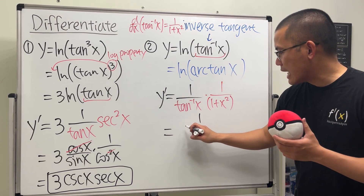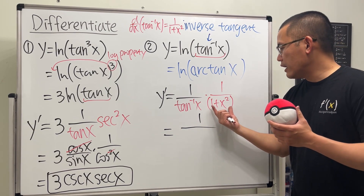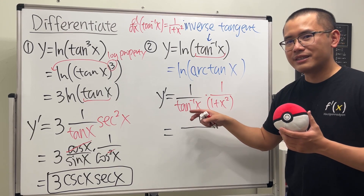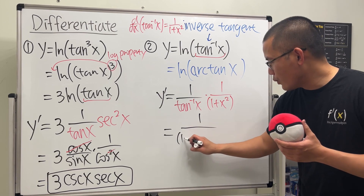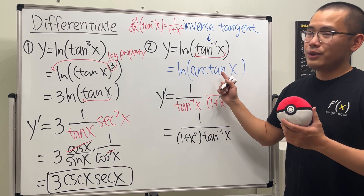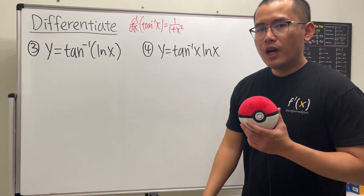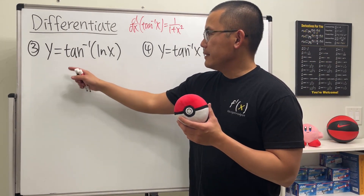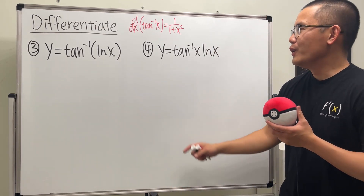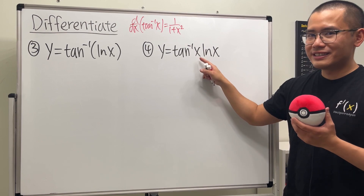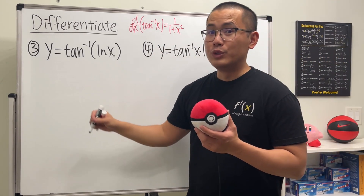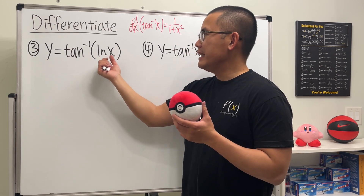So all in all we get 1 on top, over (1 + x²) times arctan(x) — putting the polynomial part first. Now let's look at problems 3 and 4. Number 3: differentiate y = arctan(ln x). Number 4: differentiate y = arctan(x) times ln(x). Problem 4 requires the product rule since it's a product of two functions, while problem 3 just needs the chain rule since ln(x) is inside arctan.